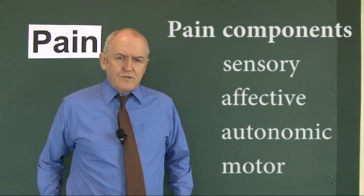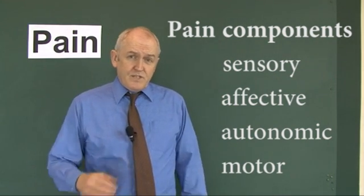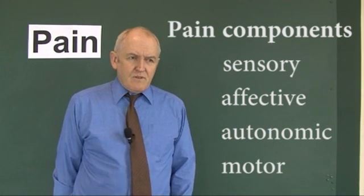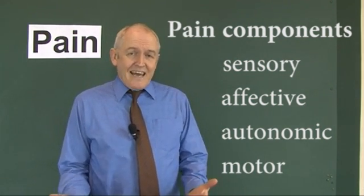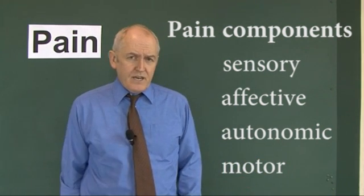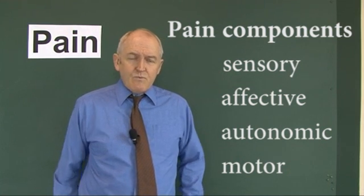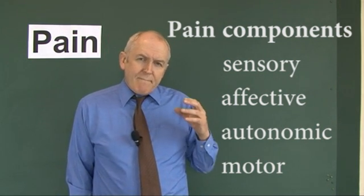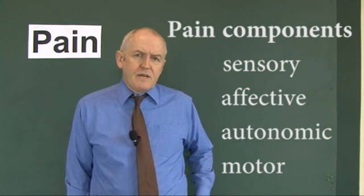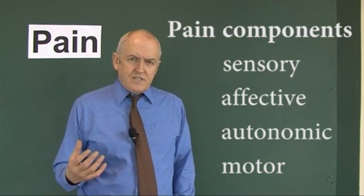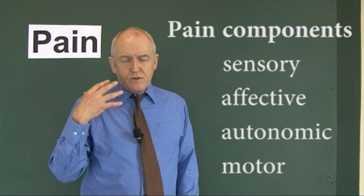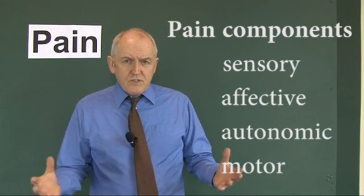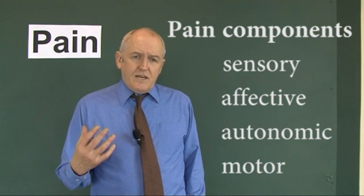Pain also has a motor component to do with movement. People will withdraw from pain — if something's hurting, they'll pull their limb away. Other times patients writhe around — we talk about people writhing in agony, and you do see this with severe pain. Yet other patients with some types of pain will lie very still to minimise it. And we normally like to tell other people we're in pain — we vocalise the pain. Some stoical patients suffer in silence, but normally there's a motor response in terms of vocalisation.